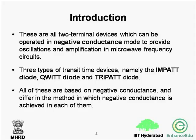These are two terminal devices which can be operated in negative conductance mode to provide oscillations and amplification in microwave frequency circuits. So they operate at a very high range of frequencies, i.e. the microwave frequencies. Three types of transit time devices exist: the IMPATT diodes, QWITT diodes, and the TRAPATT diodes. All these are based on negative conductance and they differ in the method in which the negative conductance is achieved in each of them.